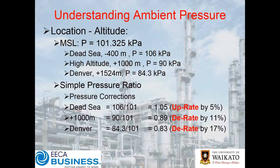There are probably not too many places here in New Zealand with this sort of installation, but you can see it's a substantial drop. If you go to somewhere like Denver in the US — the mile high city — your inlet pressure there is down at 84 kPa. Taking those three scenarios and doing your pressure ratio — 106 over 101, 90 over 101, and 84 over 101 — at the Dead Sea you can actually uprate the compressor capacity by 5%, at 1,000 metres you'll have to derate by 11%, and in Denver you'll have to derate by 17%.